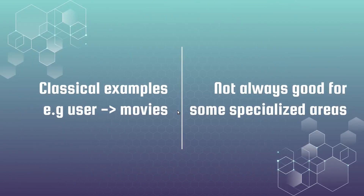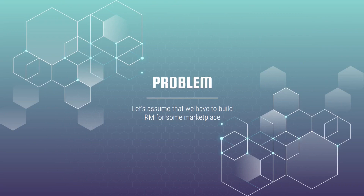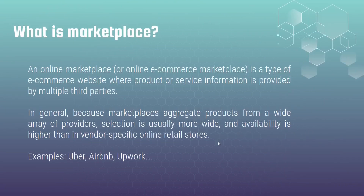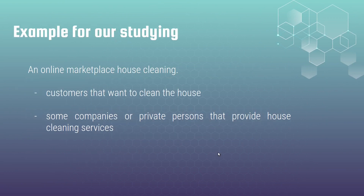But let's leave math for a while. I want to show you that the classical users-movies example and classical solutions are not always good for some special areas. Let's assume we have to build a recommendation model for a marketplace. If you don't know what a marketplace is, don't worry — a marketplace is a type of e-commerce website where product or service information is provided by multiple third parties. Because marketplaces aggregate products from a wide array of providers, selection is usually wider and availability is higher than in vendor-specific online retail stores. Good examples of marketplaces are Uber, Airbnb, and Upwork. We will choose our own example: an online house cleaning marketplace.